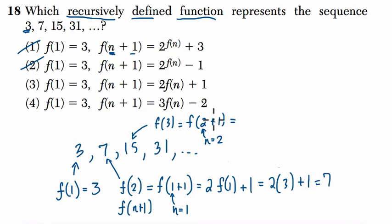Then for f of 3, that's just 2 plus 1. So it's the second step in the function plus 1. Take this to our next step. And that's 2 times f of 2 now. Plus 1. So it's 2 times f of 2. f of 2 is 7. We just confirmed that. Plus 1. It's 14 plus 1, and it's 15.